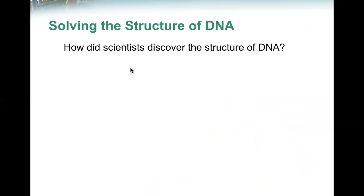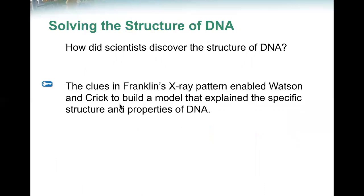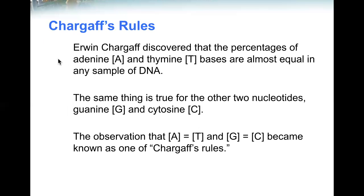How did scientists discover the structure of DNA? The clues of Franklin's X-ray pattern enabled Watson and Crick to build a model that explained the specific properties of DNA. Erwin Chargaff discovered that the percentage of adenine and thymine bases are almost always equal in any sample of DNA. The same thing is true for the other two nucleotides, guanine and cytosine. The observation that A equals T and G equals C became known as one of Chargaff's rules.